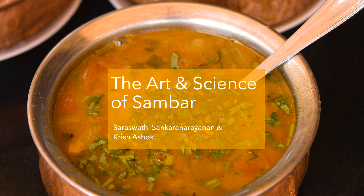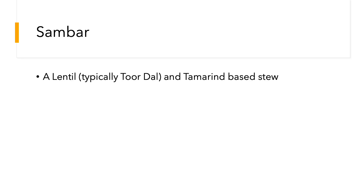This is the art and science of sambar. Sambar is a relatively modern introduction to South Indian cuisine. It is a lentil dish — typically toor dal — and there's a reason for that: sambar has so many flavors that you do not want an additional flavor in the dal itself, so we use toor dal, which is the least flavored dal. Chana dal has a strong flavor, as does moong dal.